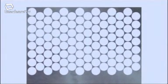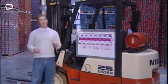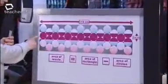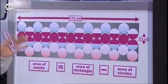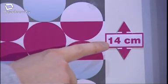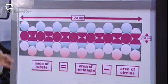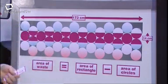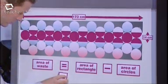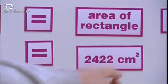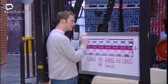I'm going to start by working out the area of the metal left behind in one highlighted row. A row consists of seven full circles and 14 half circles. The dimensions of the row are 173 centimetres wide and 14 centimetres long, and 14 centimetres is also the diameter of each circle. To work out the area of waste, we first need to work out the area of the rectangle before the circles are stamped out. That's 173 centimetres multiplied by 14, which equals 2422 square centimetres.